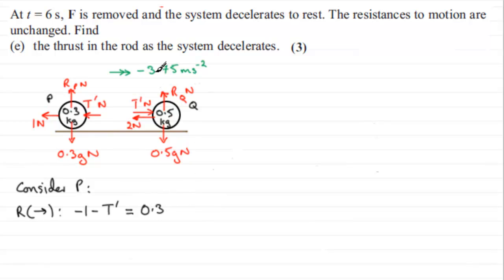times the acceleration. And the acceleration, and this is where you've got to take care, is minus 3.75. Okay, so that's going to be minus 3.75. Now if I tidy this up, we therefore have minus 1 minus T dash equals the result of 0.3 times minus 3.75, which comes out at minus 1.125.